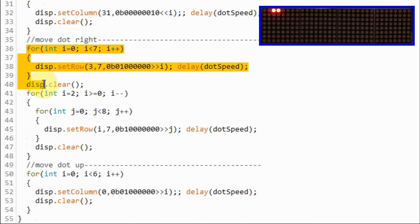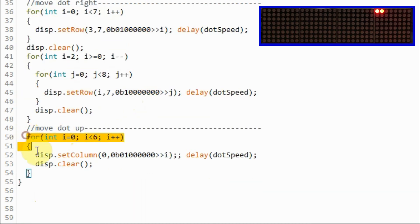And using these for loops, we will move the dot to the right. And finally, using this for loop, we will move the dot upwards. And the process continues.